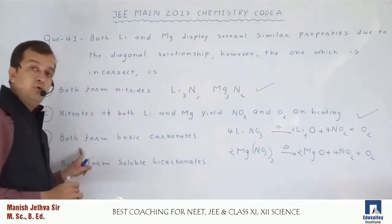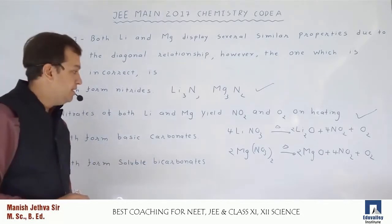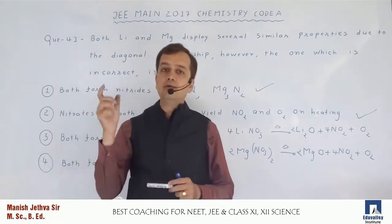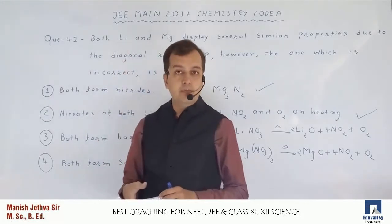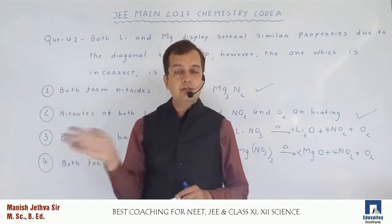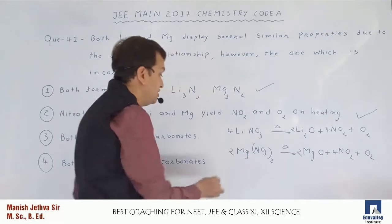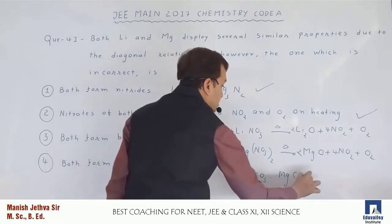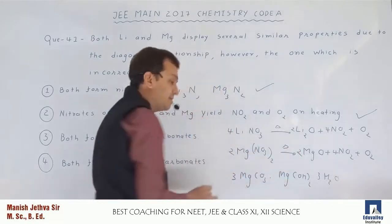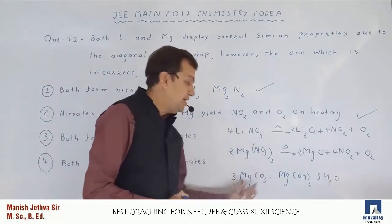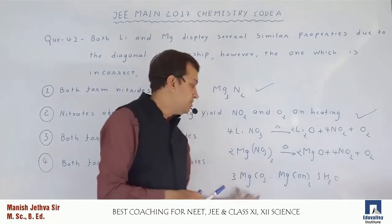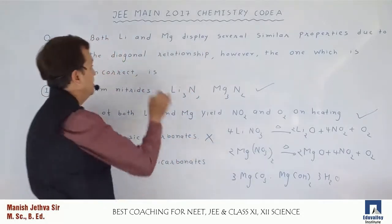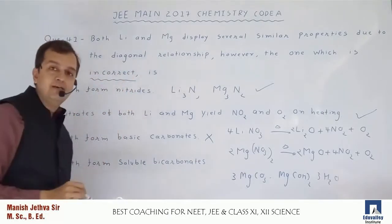The third option: both form basic carbonates. Lithium is the first element of group one and has anomalous behavior from group one elements. Lithium can make only normal carbonates — lithium cannot make any basic carbonate. Magnesium, however, can make a basic carbonate like 3MgCO₃·Mg(OH)₂·3H₂O, which is a basic compound. Therefore, option three is incorrect.